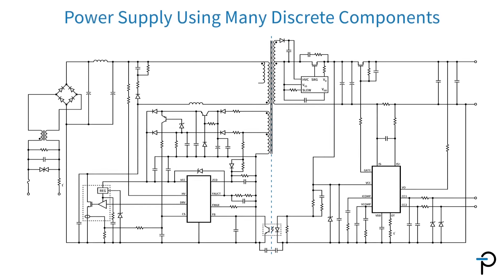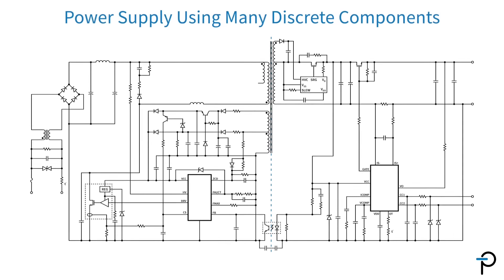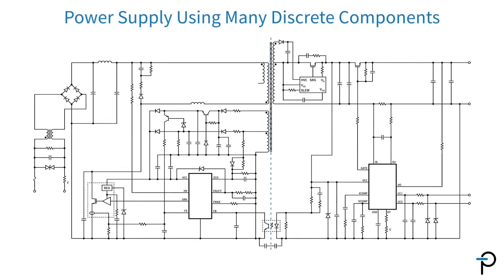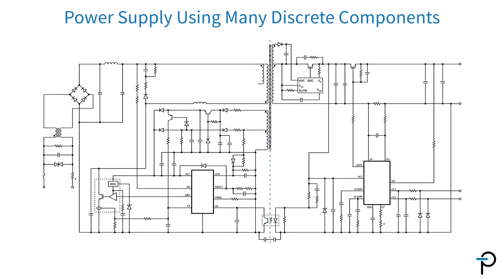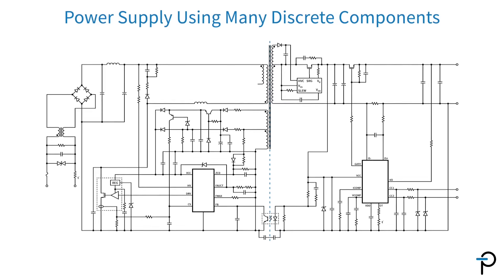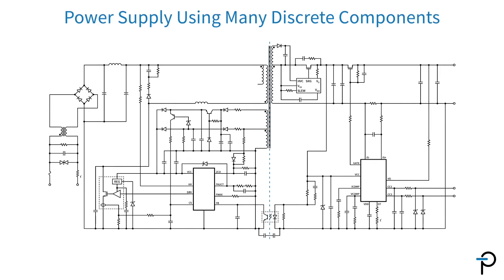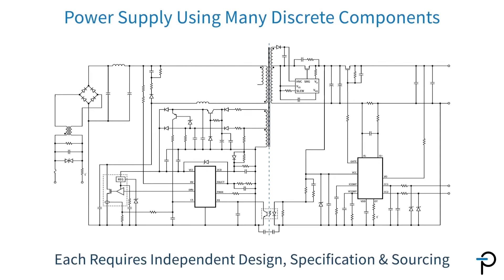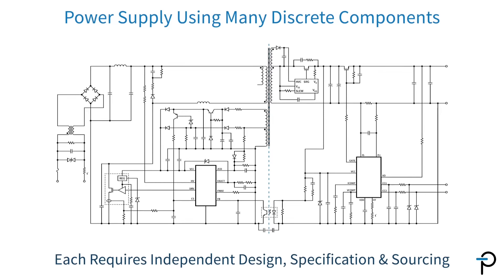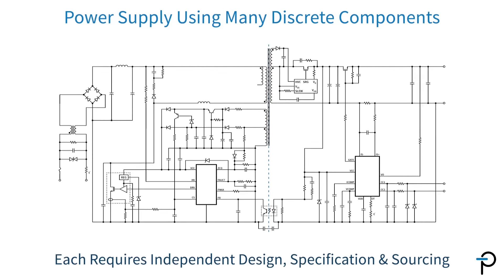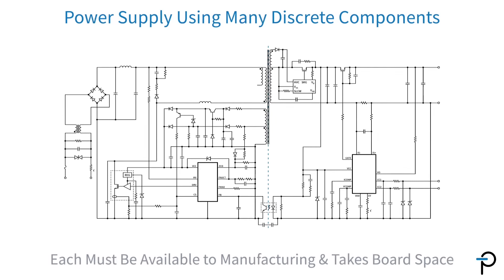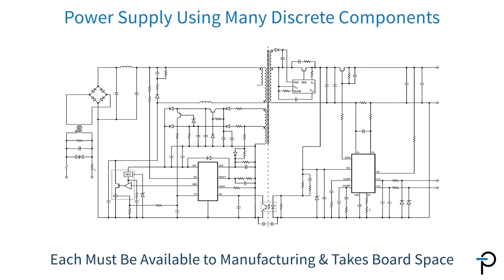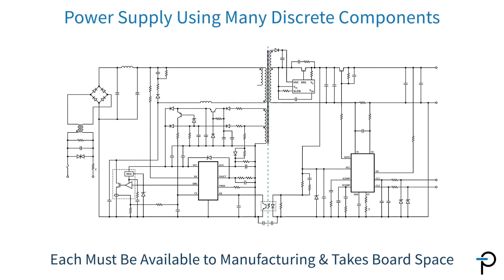Here's an example of a power supply that's been built using discrete components. What you'll notice immediately is the large number of components on the power supply. Each one of those has to be independently designed, specified, sourced, and made available to manufacturing, and takes up space on the board.